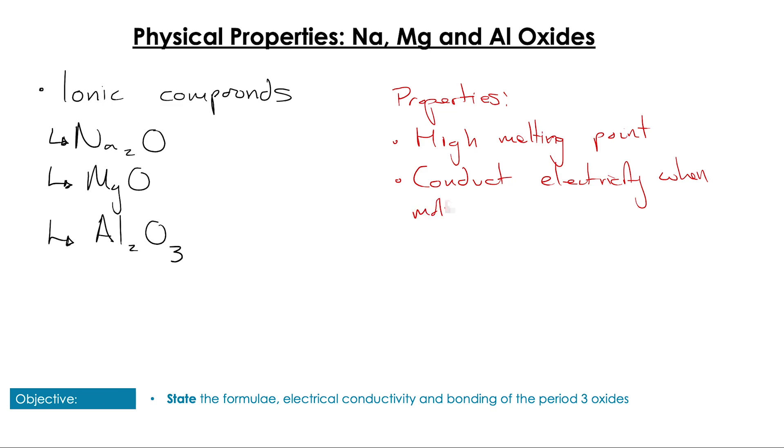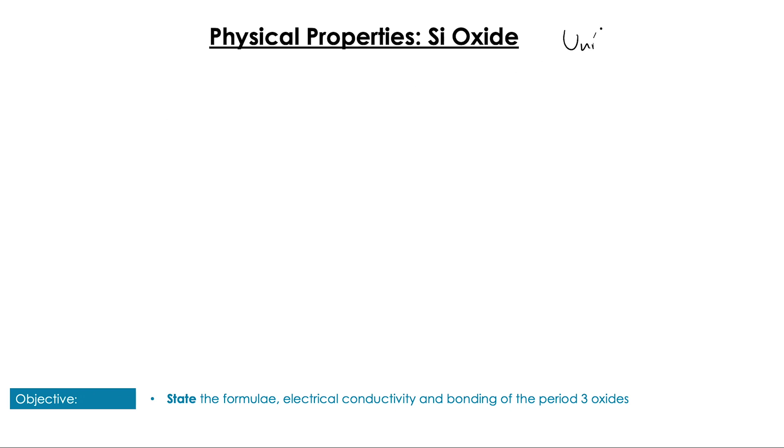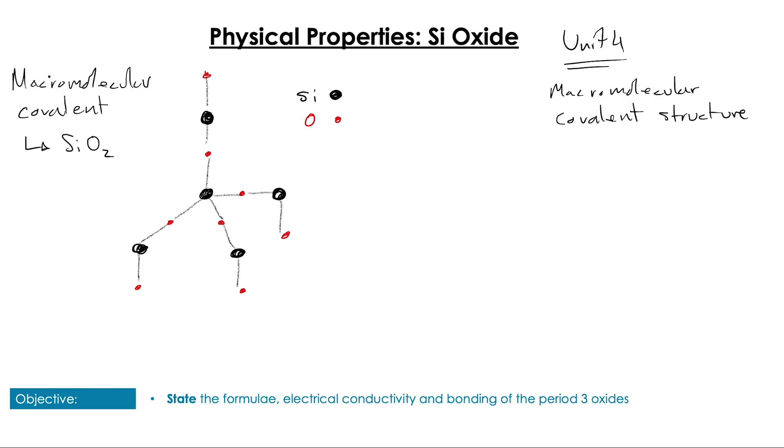Silicon dioxide's properties are of course a product of its macromolecular covalent structure, which we covered specifically in Unit 4. This structure has that characteristic tetrahedral shape, which gives it an incredibly strong structure. All of these individual covalent bonds are difficult to break by themselves, and this crystal lattice structure also means that the properties of SiO2 are very strong and it also has a very high melting and boiling point. That all comes from this repeating structure of strong covalent bonds.